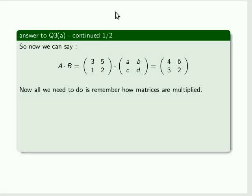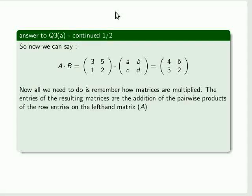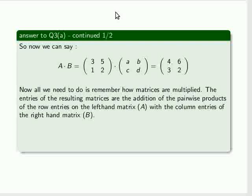Now all we need to do is remember how matrices are multiplied. The entries of the resulting matrices are the addition of the pairwise products of the row entries on the left-hand matrix A with the column entries in the right-hand matrix B.